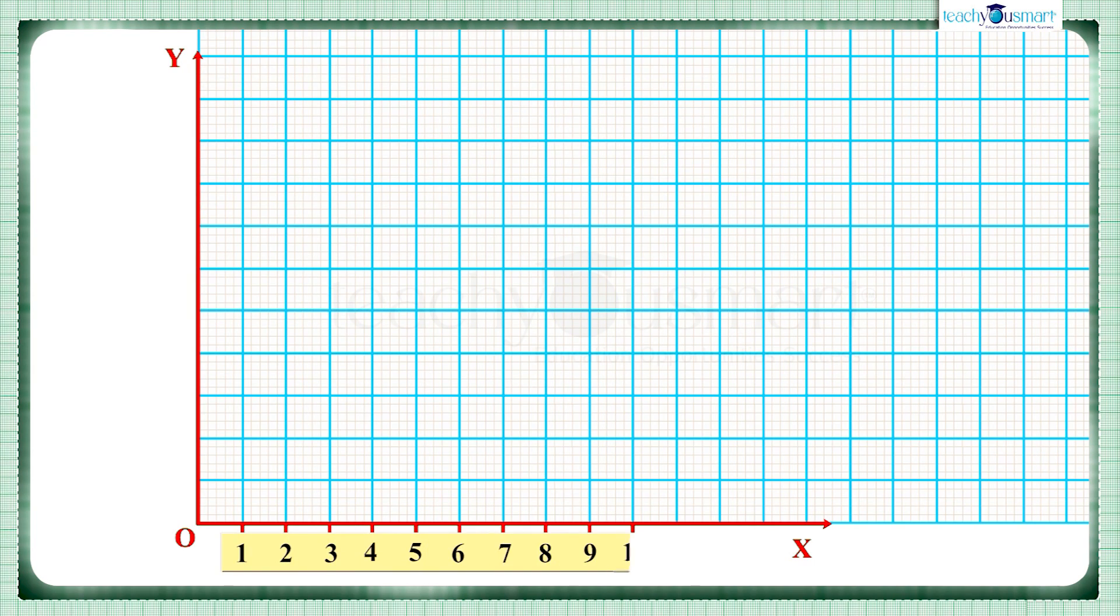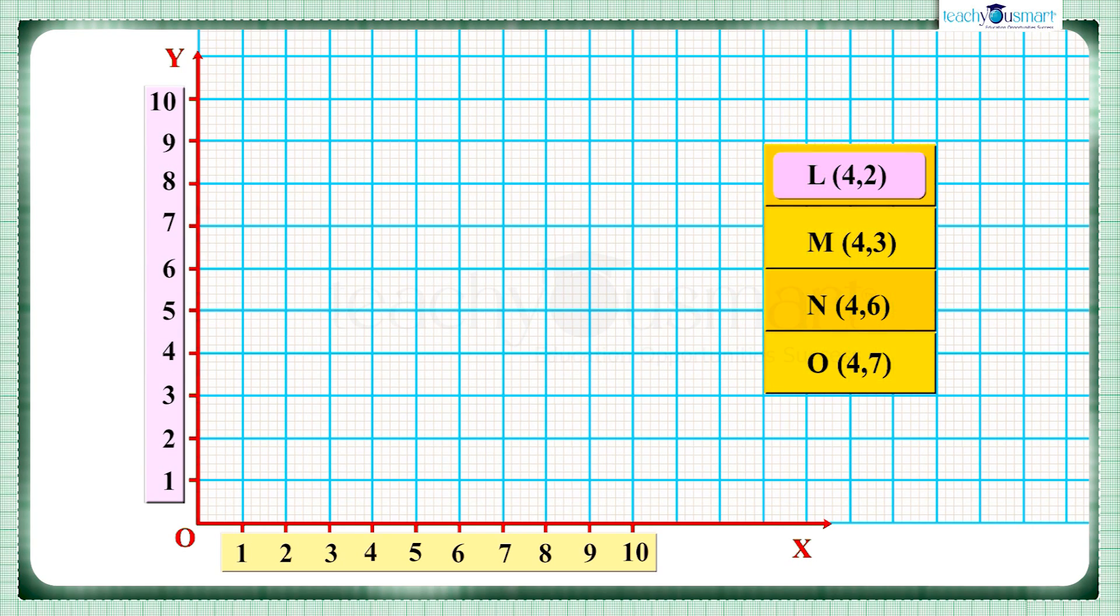Since they are number lines, markings are the same as that of a number line. Point L (4,2) is obtained by moving four units to the right from the origin on the x-axis and then two units up. Thus we reach point (4,2) which is named L. Similarly we can plot the other points M (4,3), N (4,6), and O (4,7).